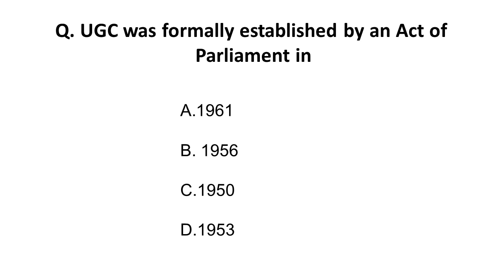The first question is: UGC was formally established by an Act of Parliament in the year. Option A is 1961, option B is 1956, option C is 1950, and option D is 1953. This is a memory-based question and you should know that UGC was established by an Act of Parliament in 1956.